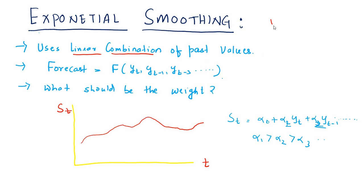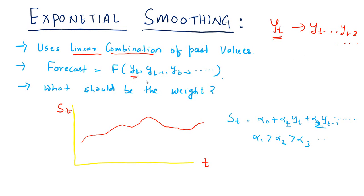So let's say we are talking about a time series yt. Exponential smoothing uses its past values like yt minus 1, yt minus 2, and so on, to forecast its future values. The future forecast, for any number of periods, is a function of the different lag periods: yt, yt minus 1, yt minus 2, yt minus 3, and so on.